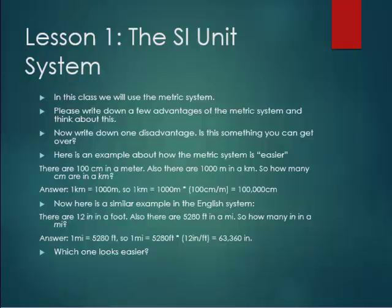Now let's look at a very similar example in the English system. There are 12 inches in a foot. Also, there are 5,280 feet in a mile. So how many inches in a mile? Following the same methodology, one mile is 5,280 feet, so one mile is 5,280 feet times 12 inches per foot, which gives a number of 63,360 inches. So what I always ask my students at this point is to look at these and try to decide which one looks easier. We will use the metric system almost exclusively in this class. Please review it and ask your instructor at any time if you have any questions.